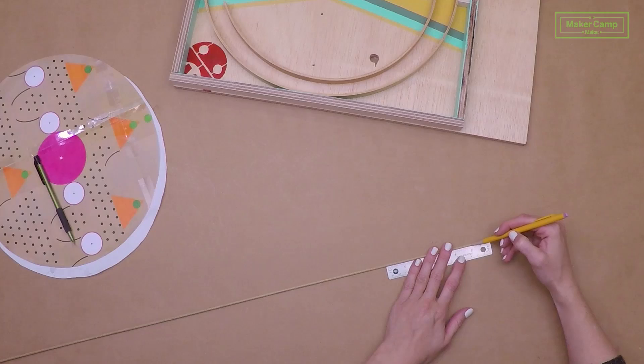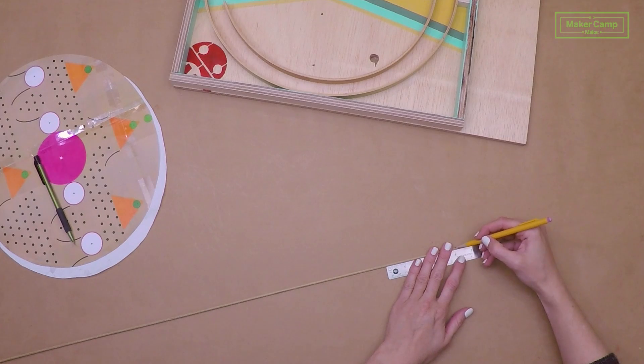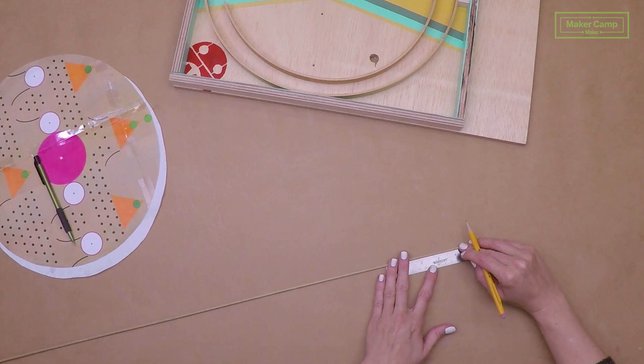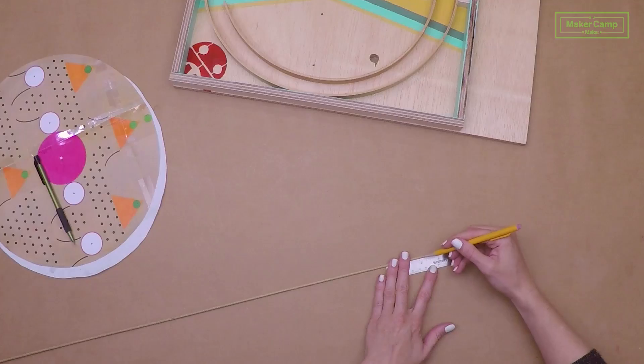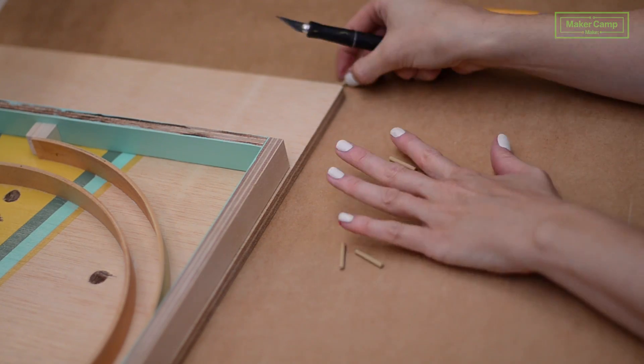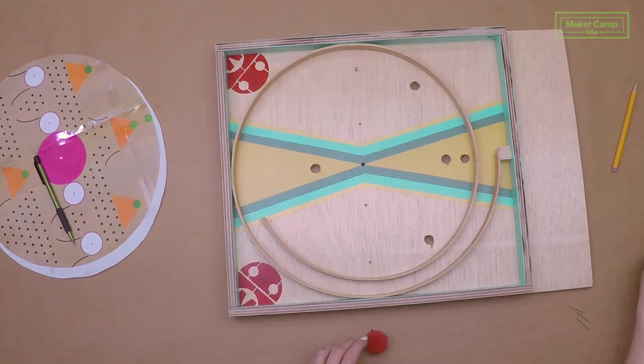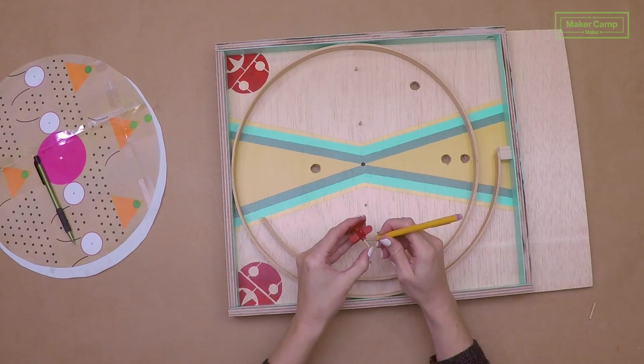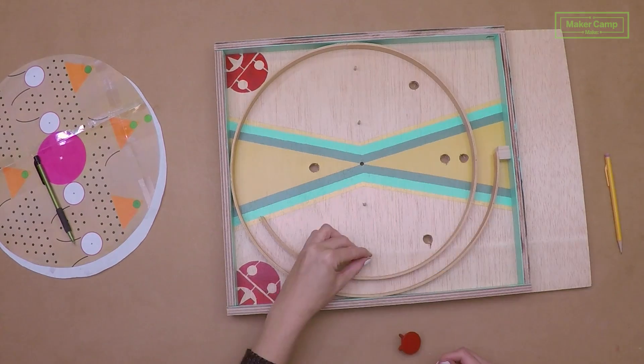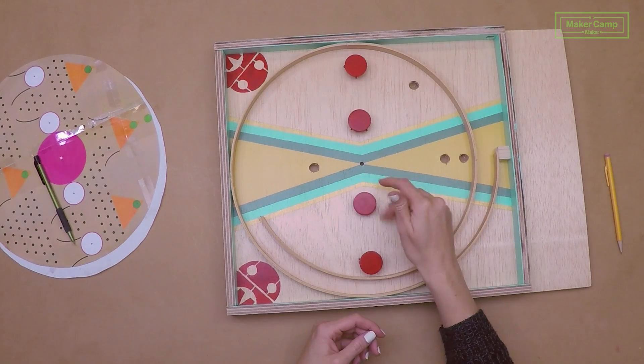Next, we're going to add the dowels for our spinners. Take your one-eighths inch dowel and mark them in one inch increments. Then cut them with your craft knife. Put just a little bit of glue in each of your one-eighths inch holes and then put your dowel inside and tap it with a hammer. Check your spinners!